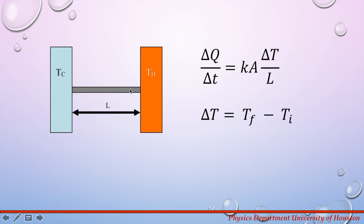A is a cross-sectional area of the bar and L is the length. The constant K is a thermal conductivity of the material.